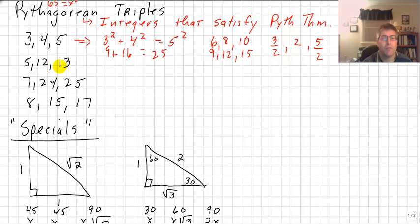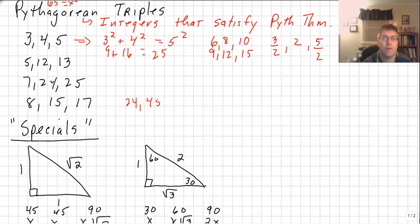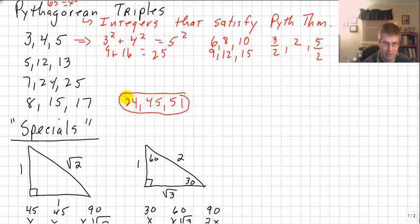Other families would be the 5, 12, 13 — where 5 squared plus 12 squared equals 13 squared — the 7, 24, 25, and the 8, 15, 17. The multiplying concept still holds: the 8, 15, 17 is the same as 24, 45, 51, where I've increased each by a factor of 3. So this is still the 8, 15, 17 family if I take out the common factor.